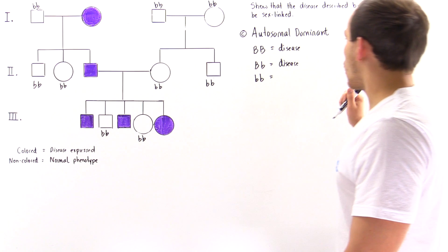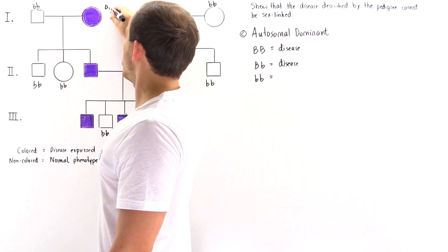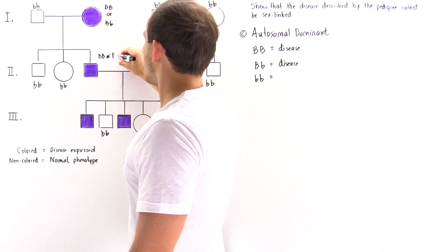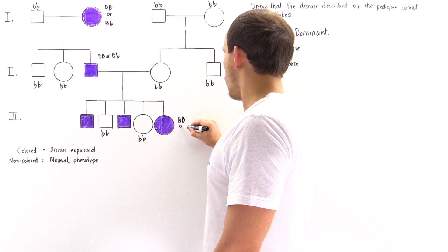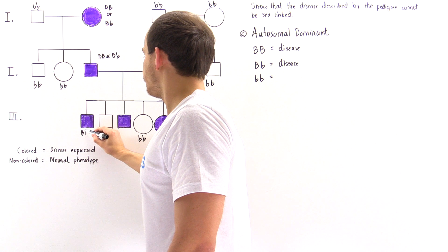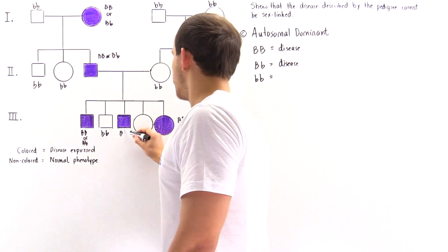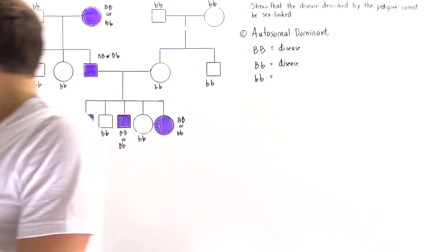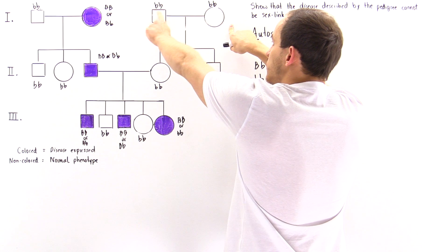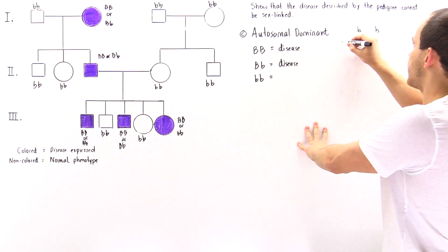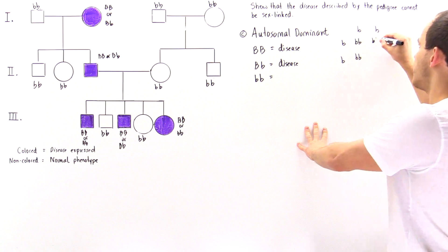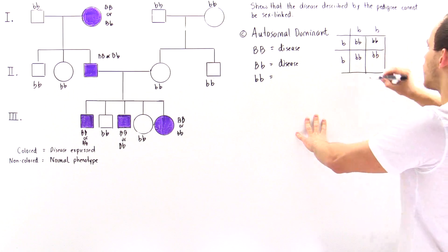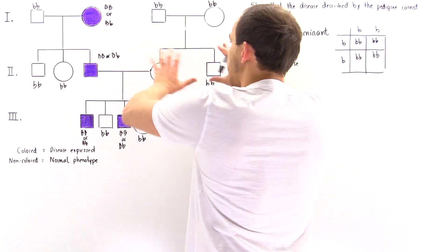All individuals with the disease phenotype are either uppercase B, uppercase B or uppercase B, lowercase b. When we cross lowercase b, lowercase b with lowercase b, lowercase b, the only offspring produced are lowercase b, lowercase b — which is absolutely consistent with the two normal individuals shown in that branch of the pedigree. Both individuals don't show the disease phenotype, so this works out.